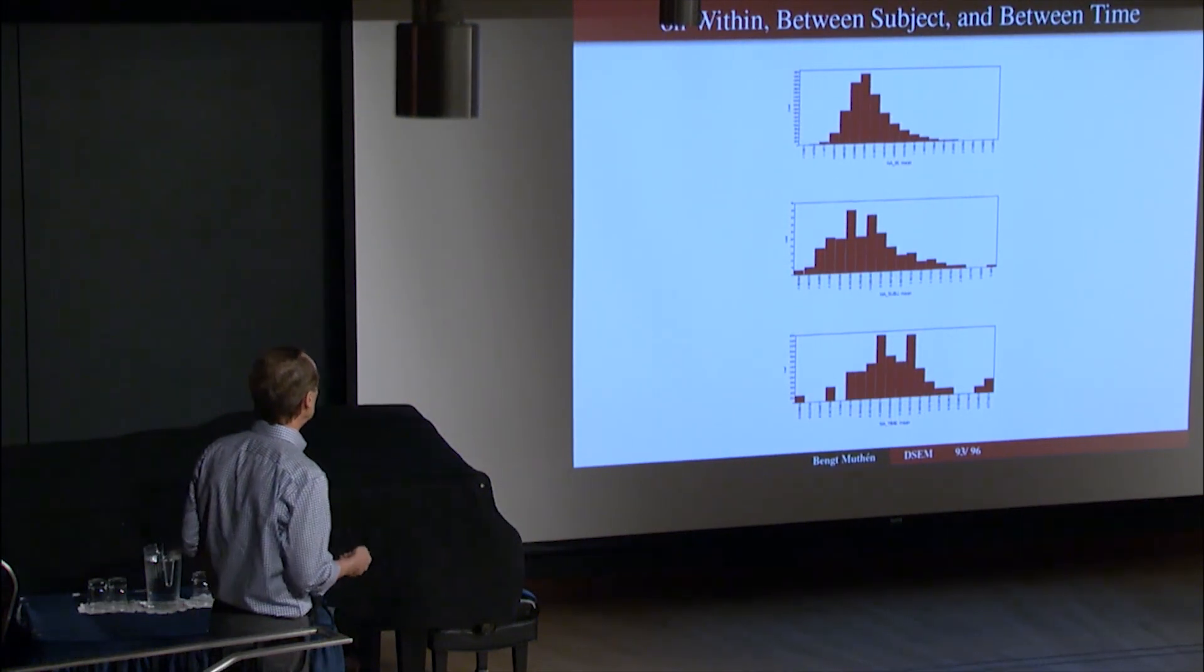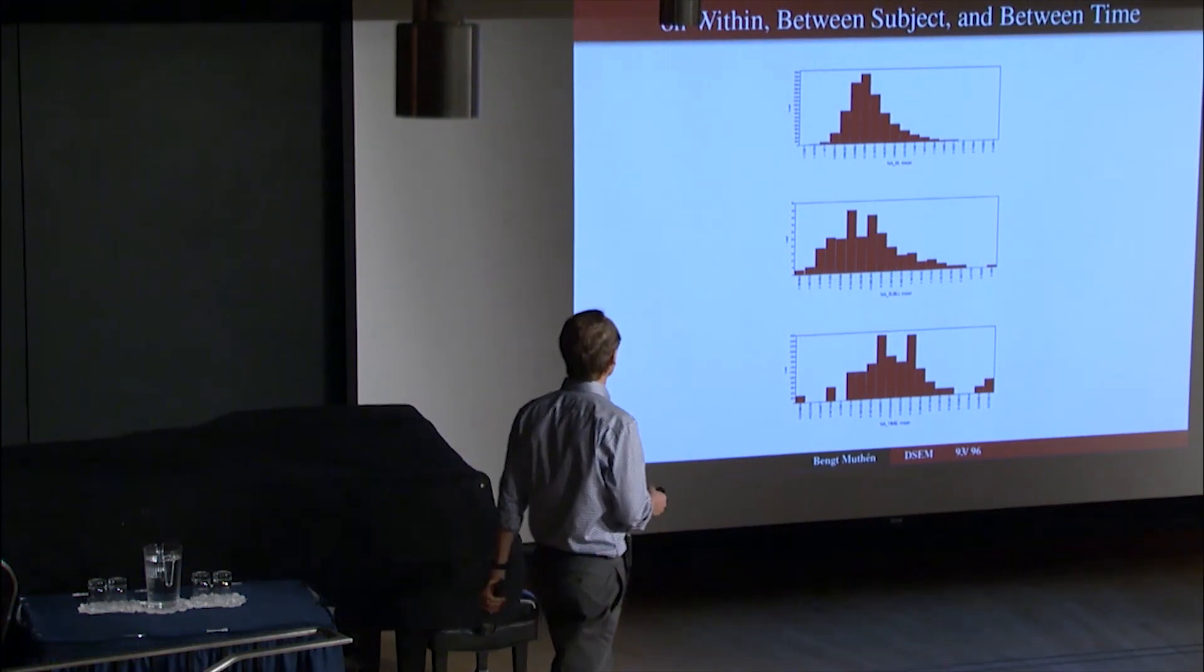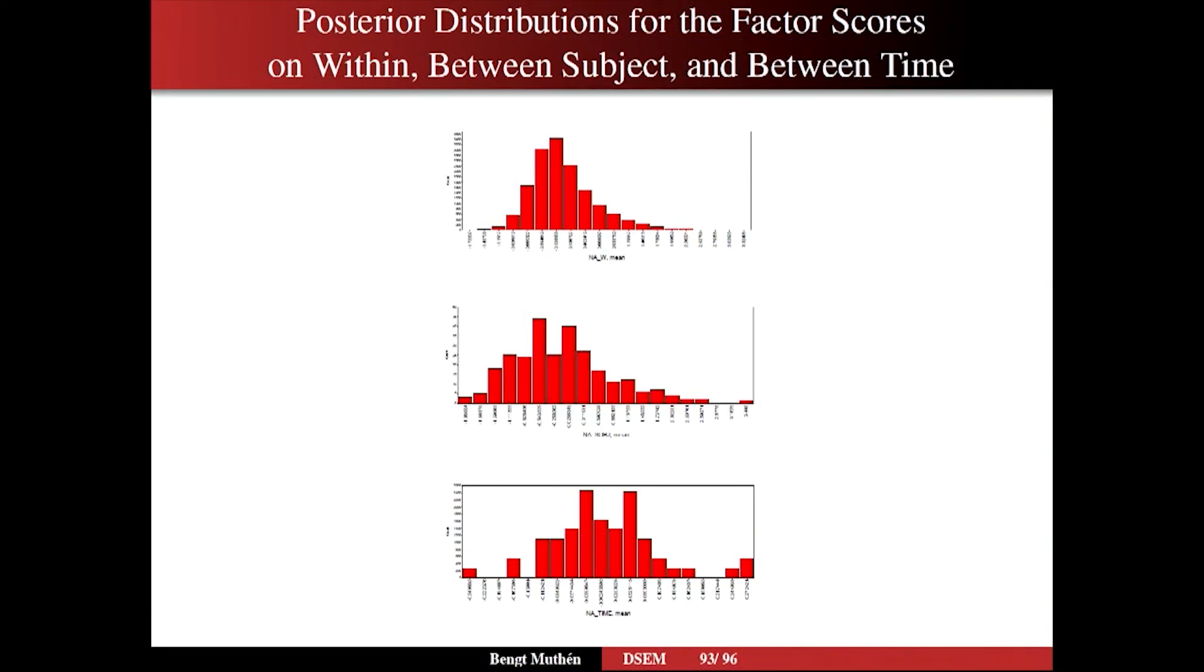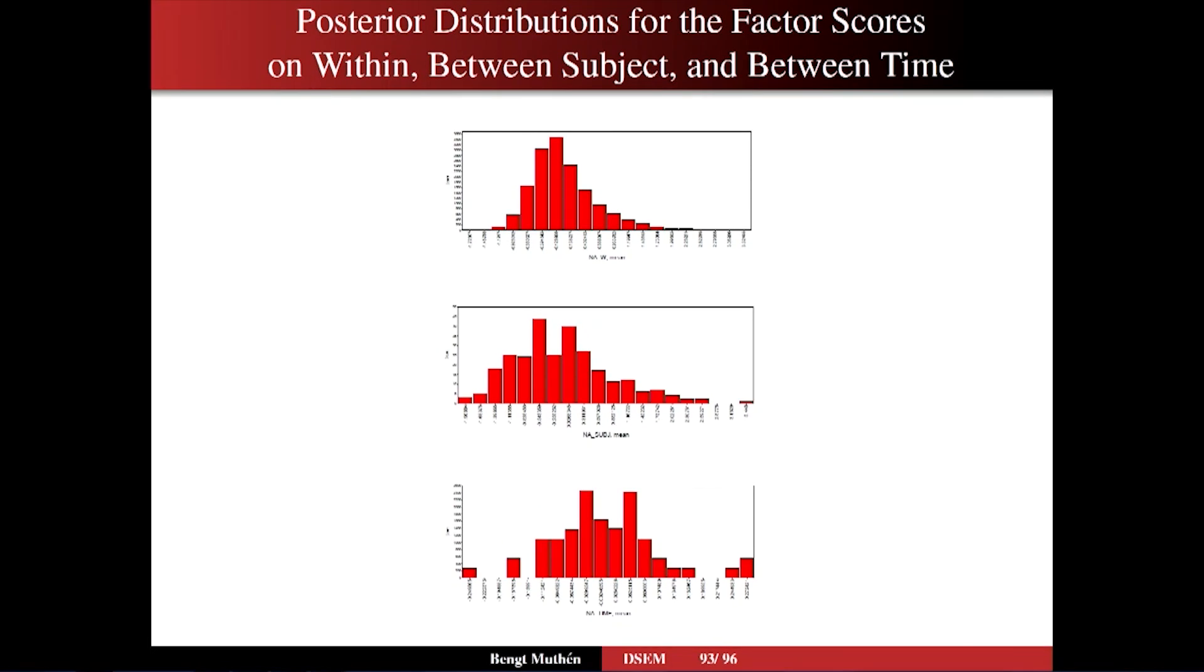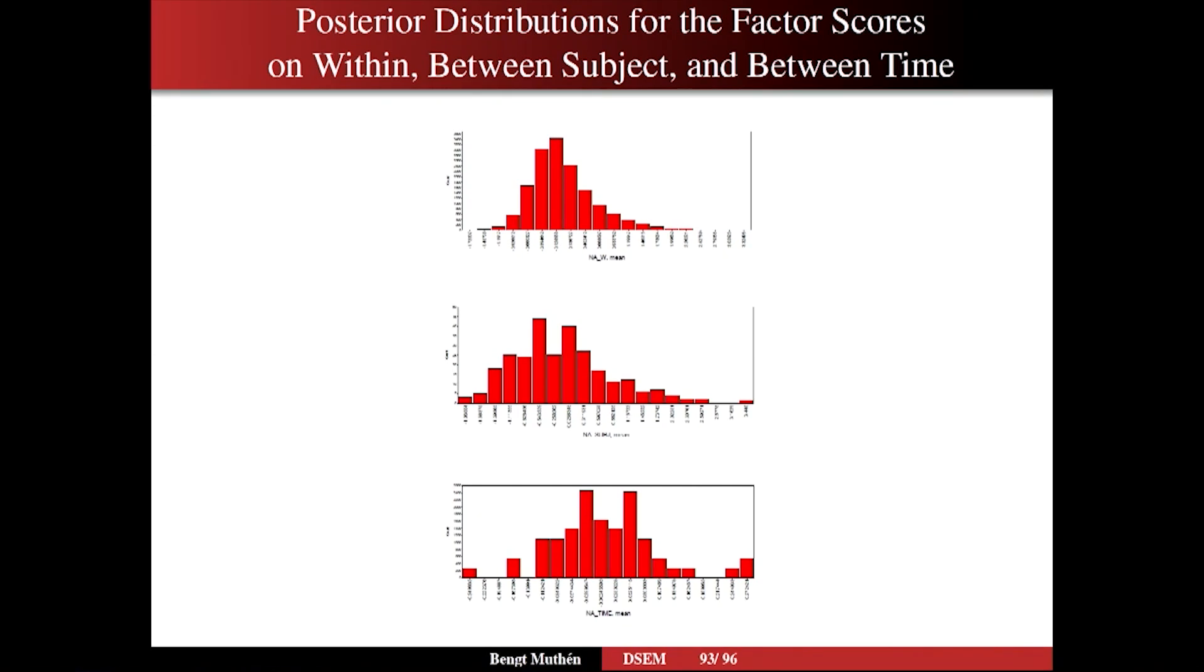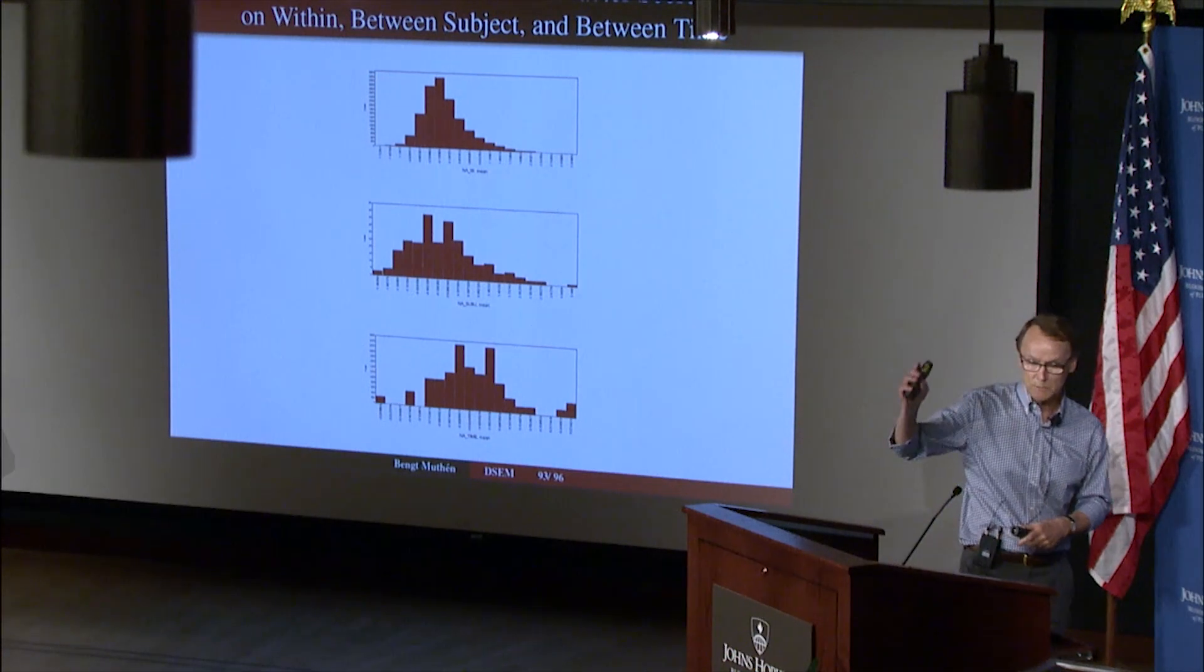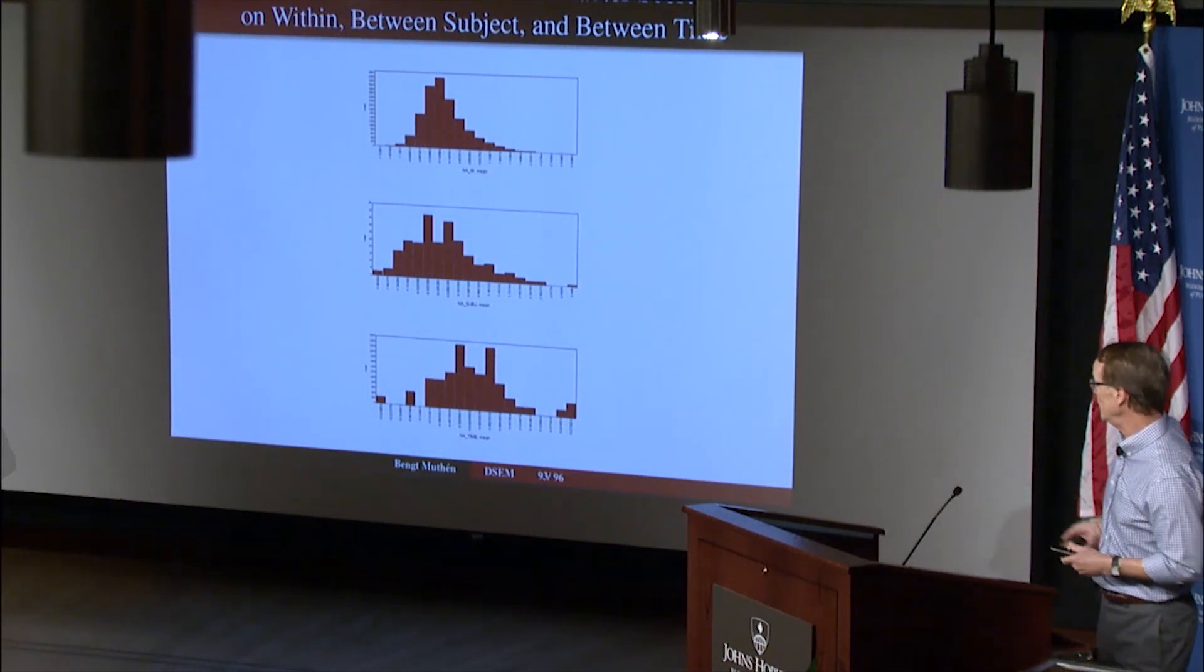You also get the posterior distributions of these factors. On within, and on between, and between time. So within, it's not too far from normal. But it's a little bit skewed. And that's a little bit skewed, but not too bad. And that's not too far from normal either. But again, the factor distribution is going to be discussed by Martin Schulzberg tomorrow after lunch.